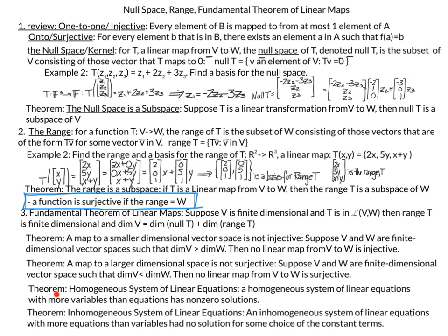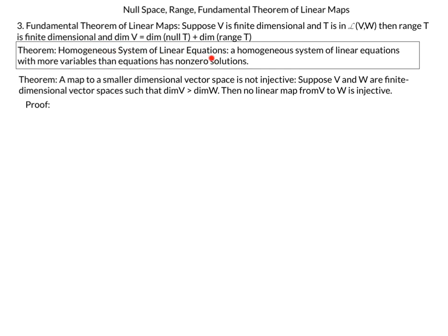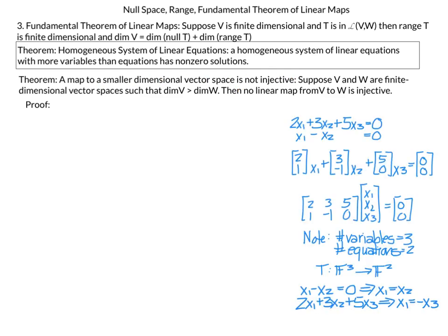For our next two related theorems, recall that a function is surjective if its range equals W. The first theorem is about homogeneous systems of linear equations. A homogeneous system has all right-hand sides equal to zero. An example: 2x1 + 3x2 + 5x3 = 0 and x1 − x2 = 0 is a homogeneous system with 3 variables and 2 equations.